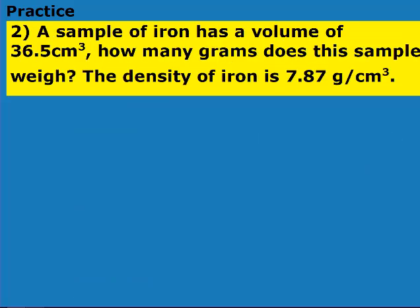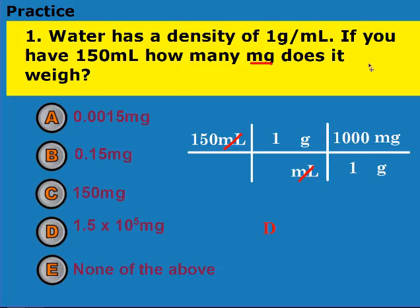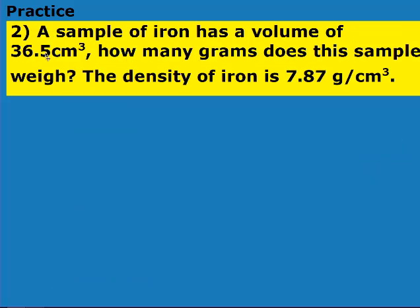Go ahead and pause the video and try this one on your own. Remember that you're always going to start with either the mass or the volume. In this problem, the density is a conversion factor. We want our answer in one unit, so I have to start with just one unit — which is volume — and I have density. So you'd have to start with a 36.5. Pause the video and restart when you have your answer.